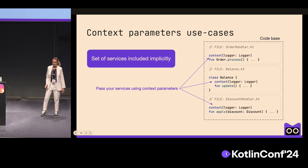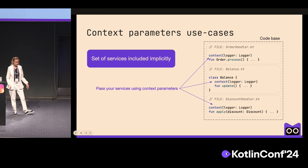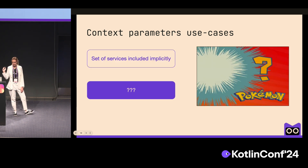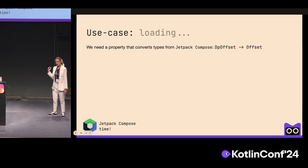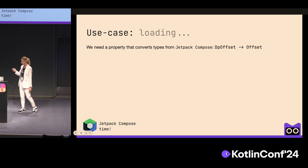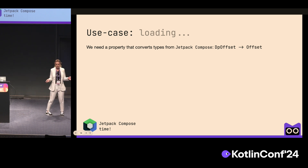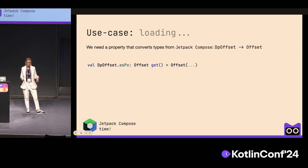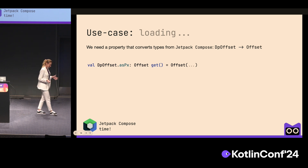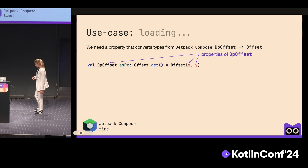This is the first use case where context parameters solve potential problems. If you need a set of services throughout the entire codebase, you can include them implicitly using context parameters. Now let's explore the next use case. We'll be Android developers, and we have to write a property which converts types from the Compose library — DpOffset to Offset. DpOffset has properties called x and y which describe the position.